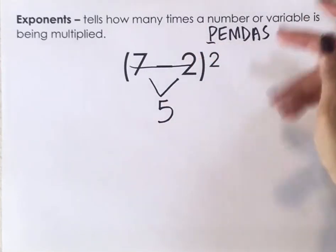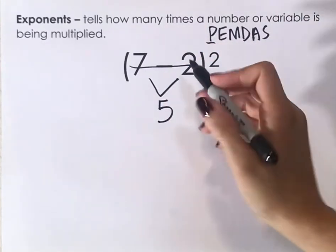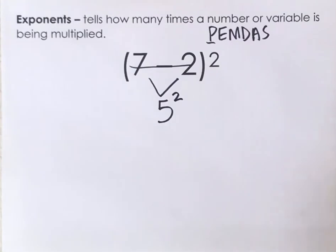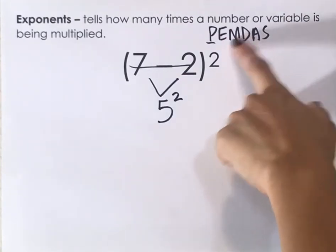That's gone, and what's left is a squared. So we're going to put that 2 right there. That's an exponent.